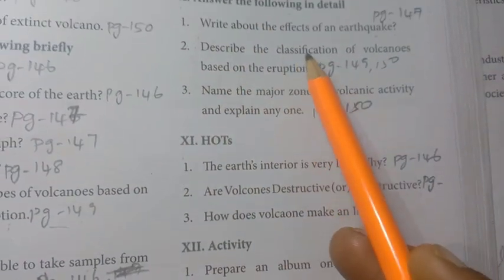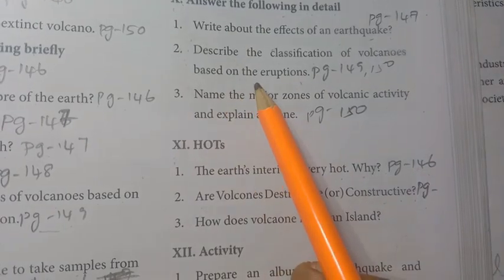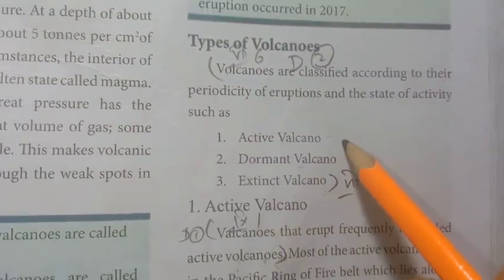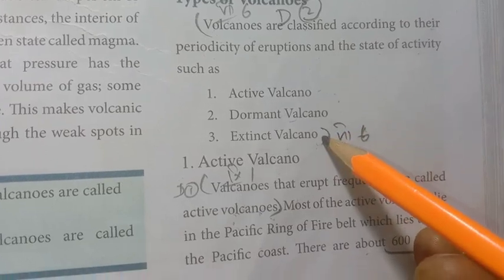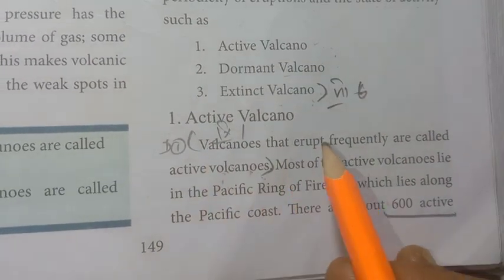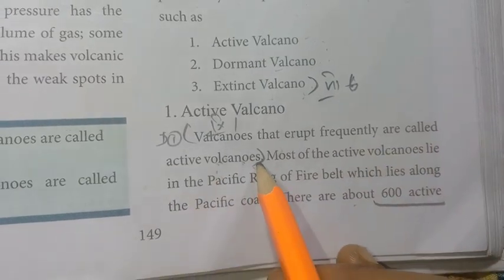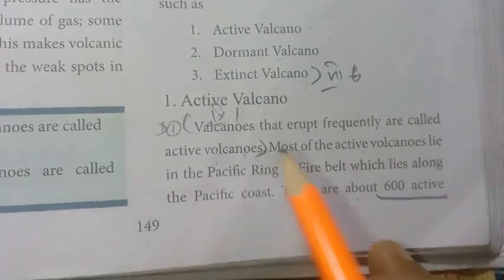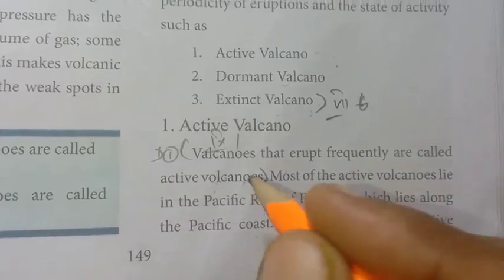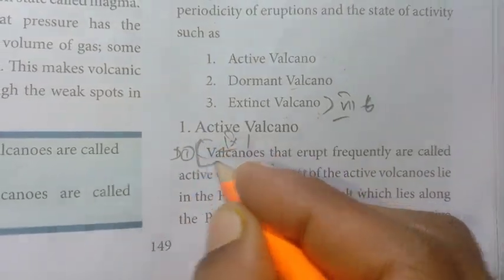Second detail question: Describe the classification of volcanoes based on eruptions. Page number 149 and 150. Based on eruptions, volcanoes are classified as active volcano, dormant volcano, and extinct volcano. Volcanoes that erupt frequently are called active volcanoes. Most are found along the Pacific Ring of Fire, which lies along the Pacific Coast. There are about 600 active volcanoes in the world.